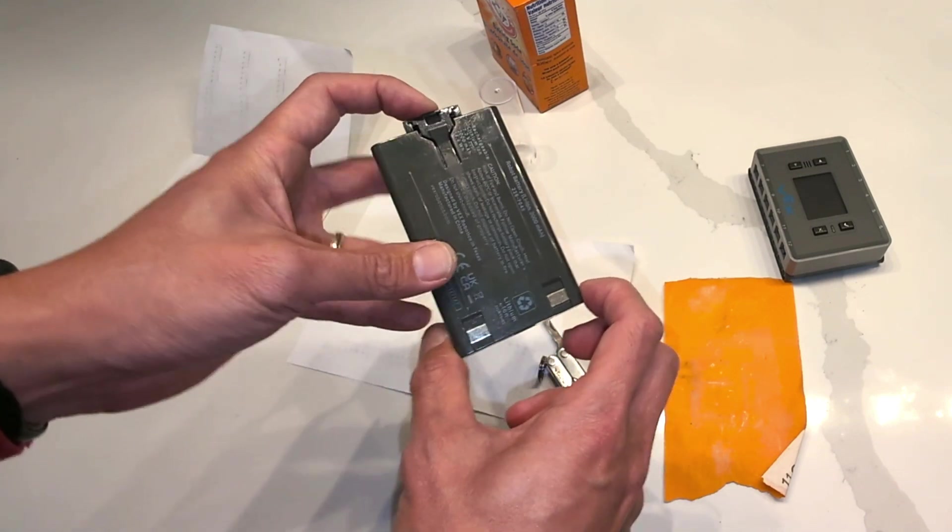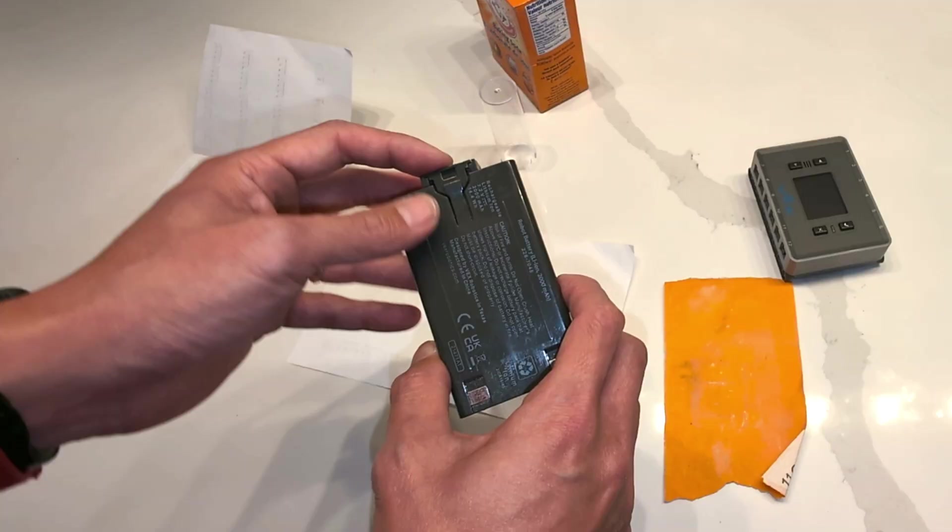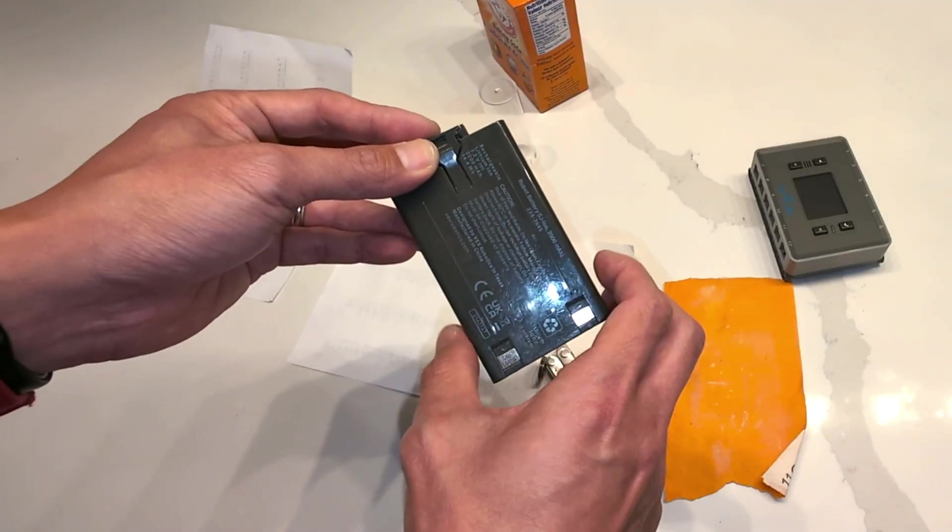So what we're going to use is essentially crazy glue and a little bit of baking soda. The baking soda is the trick that will make this nice and hard.